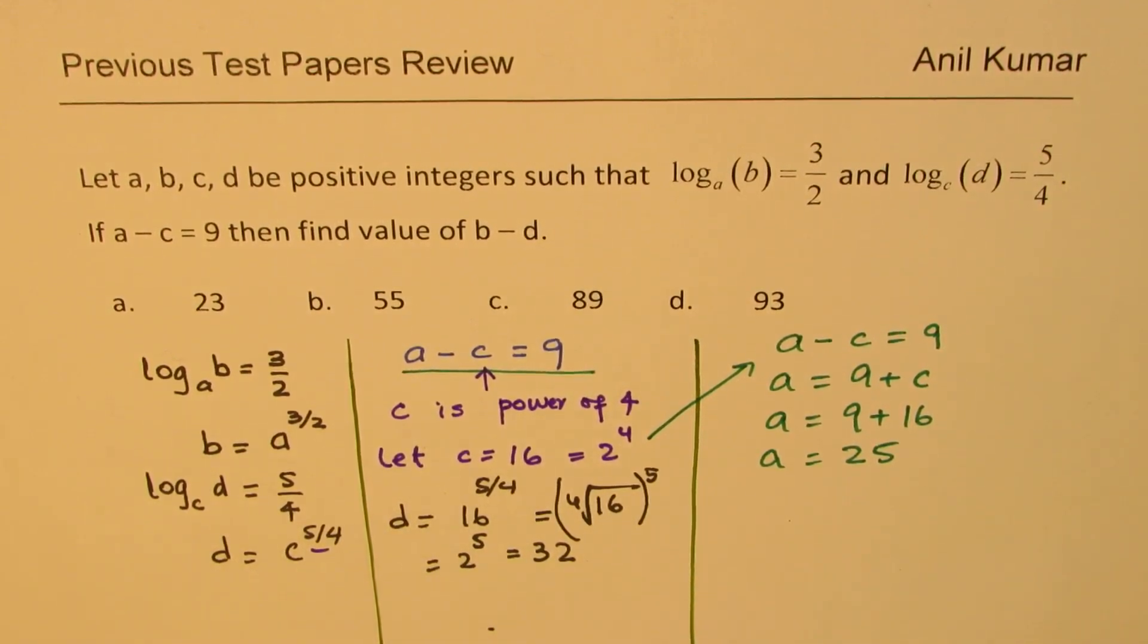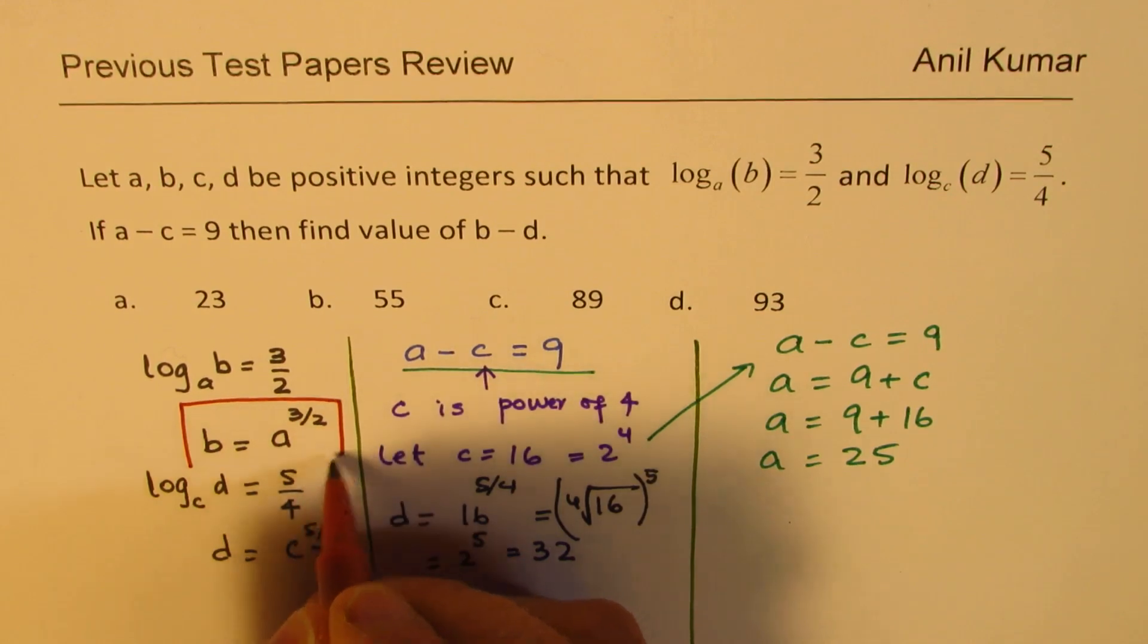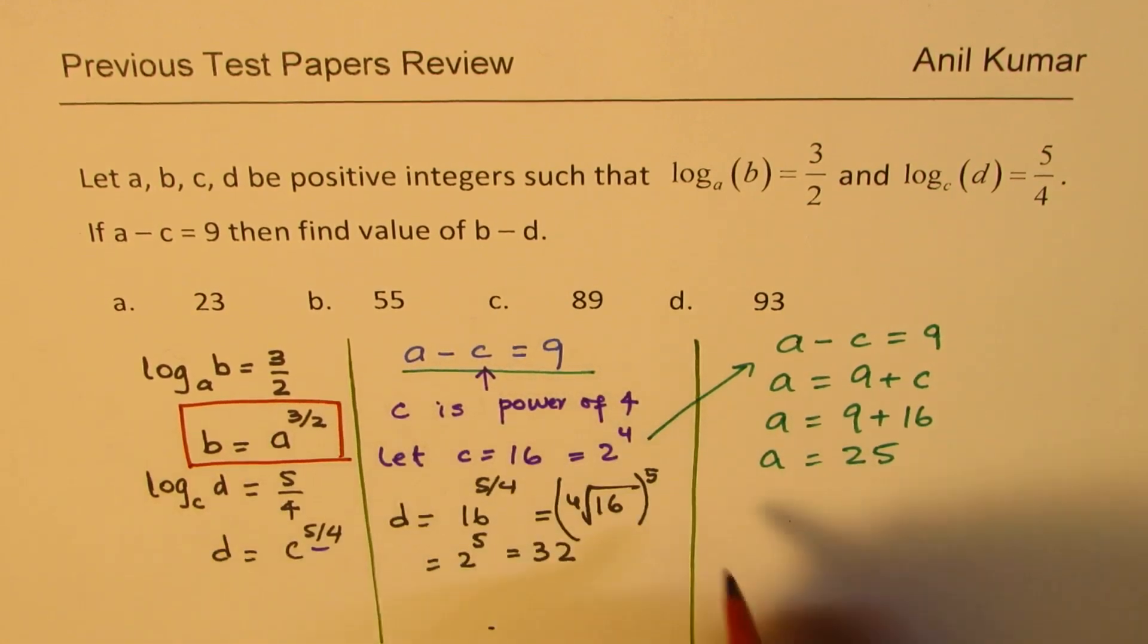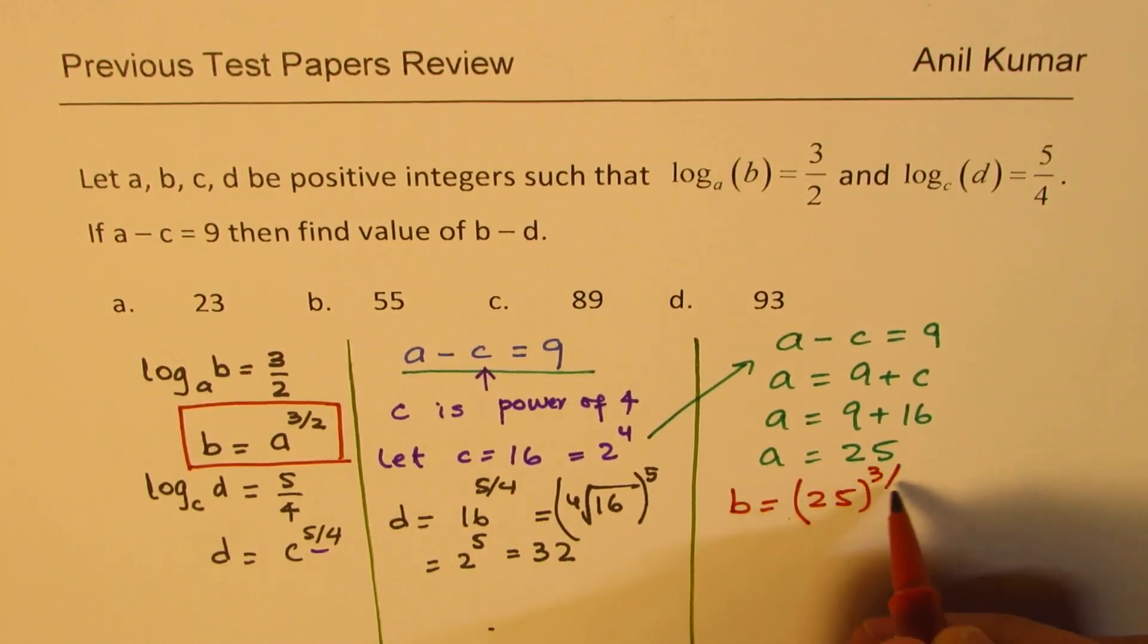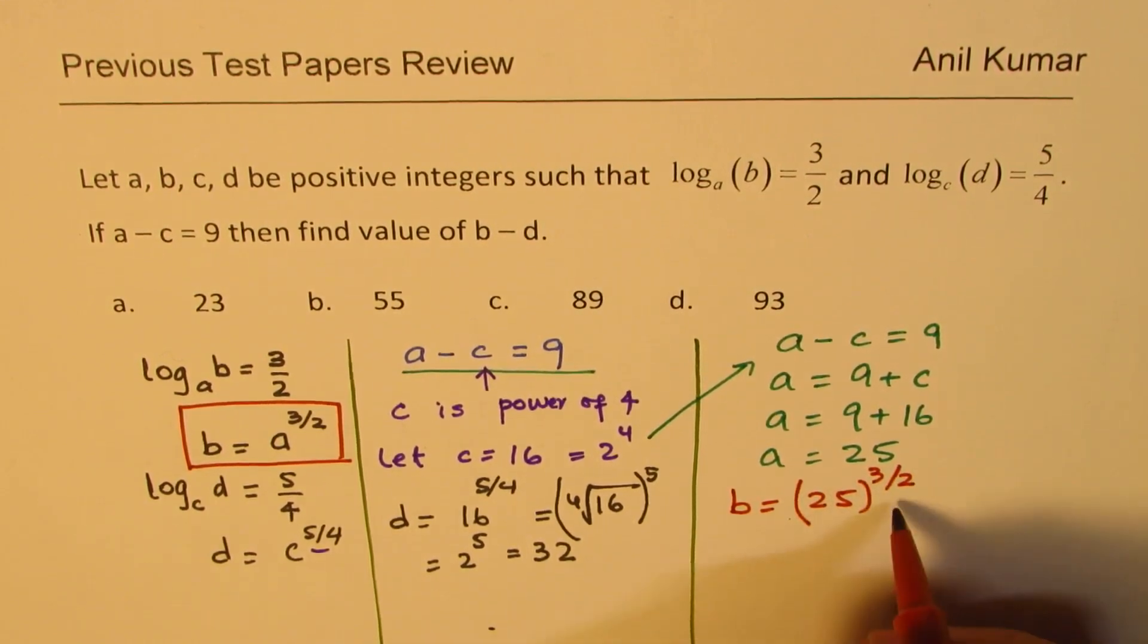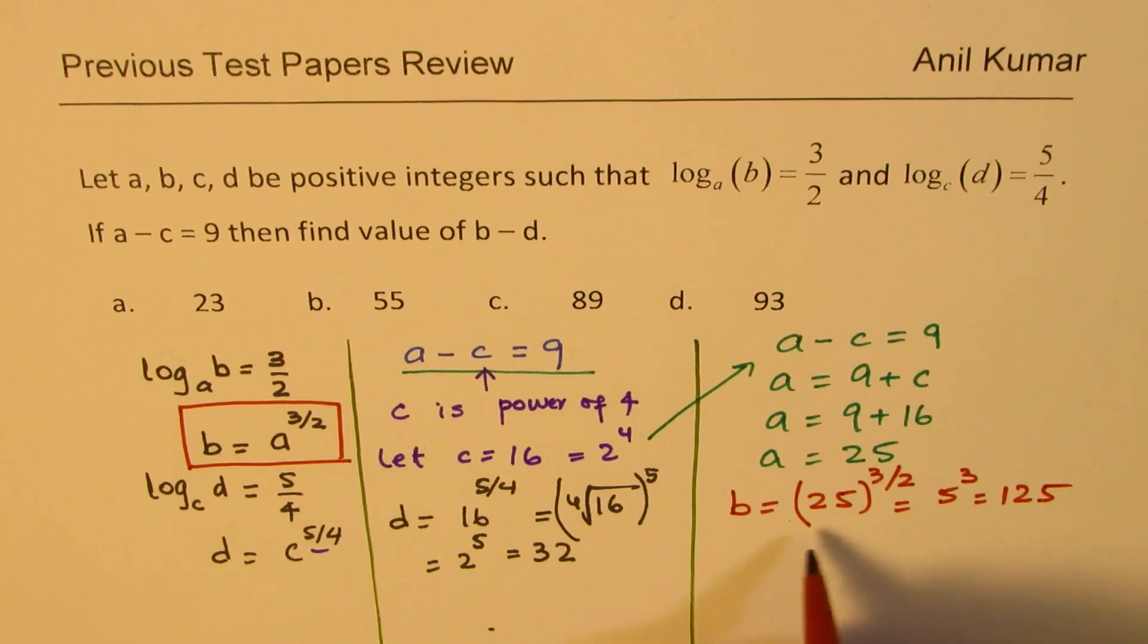So if A is 25 for you then what is B? Well we know that B equals A to the power of 3 over 2. So B equals 25 to the power of 3 over 2, which equals 5 cubed or 125. So we get a value of B also.